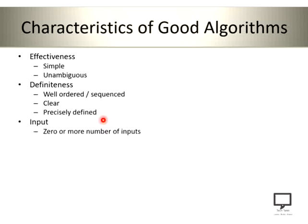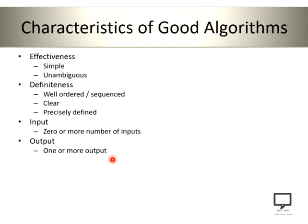The next characteristic is input. Every algorithm can accept either no input, one input, or more than one input. So input is the next important characteristic of a good algorithm. And the next one is output. Every algorithm should give at least one output, or it can also give more than one output. Because we usually define an algorithm to solve a problem or to complete a task, the output of your algorithm will be the solution to that problem or the completed task. So an algorithm must give the correct output.